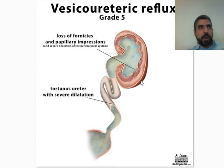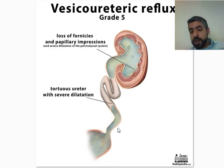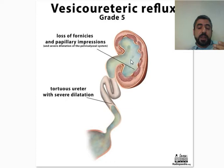In voiding cystography, we inject contrast into the urinary bladder via a Foley catheter, fill it, and look for any signs of contrast material refluxing into the kidney. When reflux occurs we can grade it and determine the severity. The important thing is to image the patient during increased intra-abdominal and intravesical pressure — and we increase intravesical pressure simply by voiding.